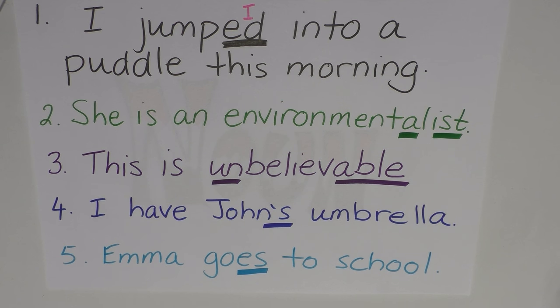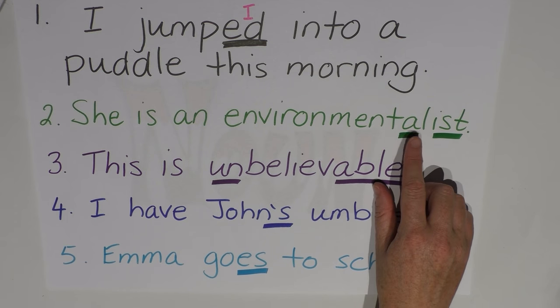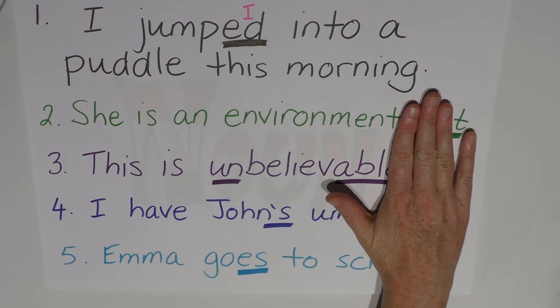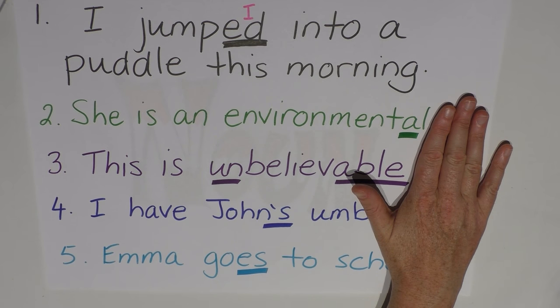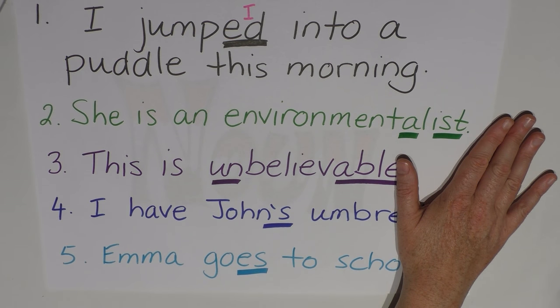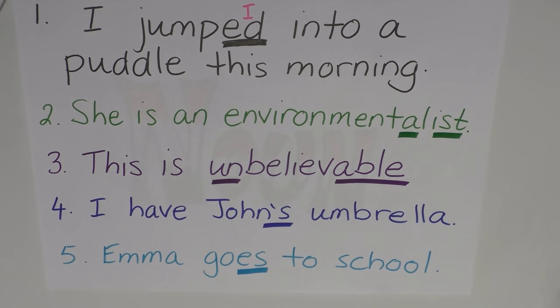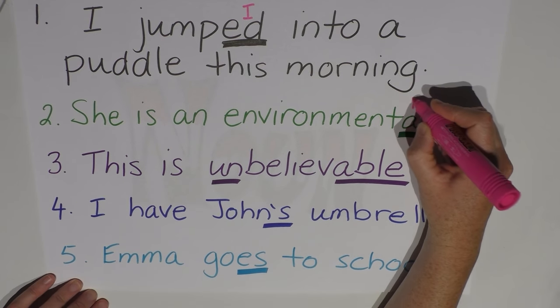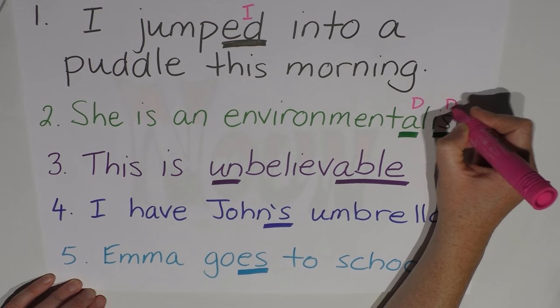Number two, she is an environmentalist. The environment, I'd say, is our root word here. If we add -AL onto that, it becomes the adjective, an environmental problem. And if we add -IST onto the end, it becomes a noun again, but it's specific to being a person. So I think both of these are derivational changes, changing to the adjective and then changing to a noun with a person.